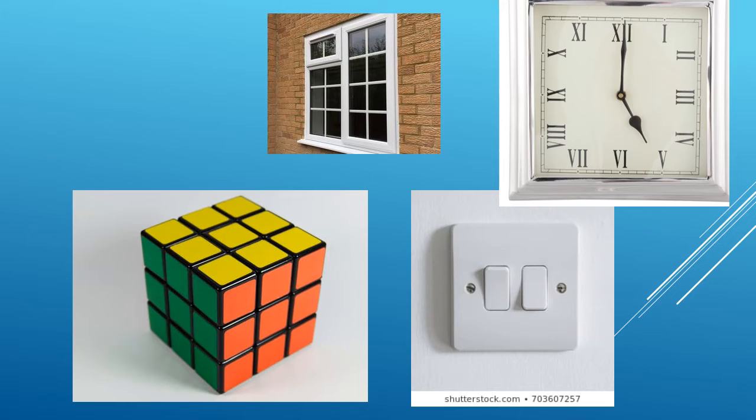We can see a window can be a square. A window could also be a rectangle. We have a clock. We have a light switch. And we have a cube. These can all represent squares.